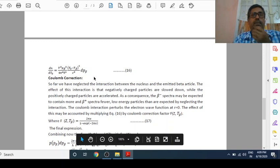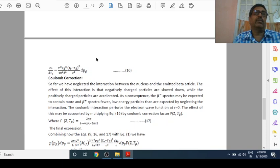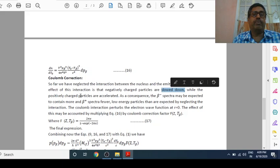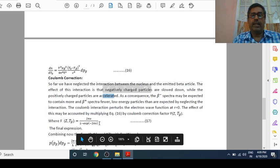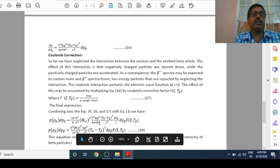This is not the final expression because so far we have neglected Coulomb interaction. We need to correct it, known as Coulomb correction. Now we see what is the effect of Coulomb interaction which we have ignored earlier. So far we have neglected the interaction between the nucleus and the emitted beta particle. The effect of this interaction is that negatively charged particles are slowed down, while the positively charged particles are accelerated.